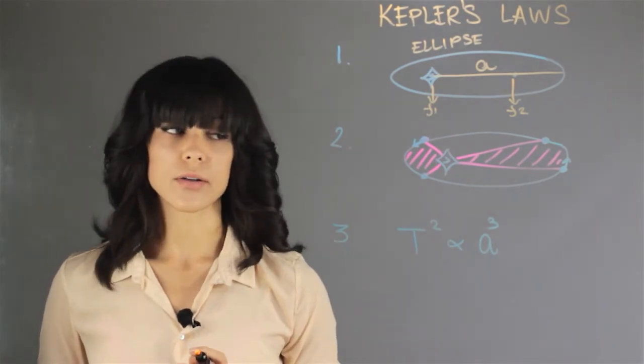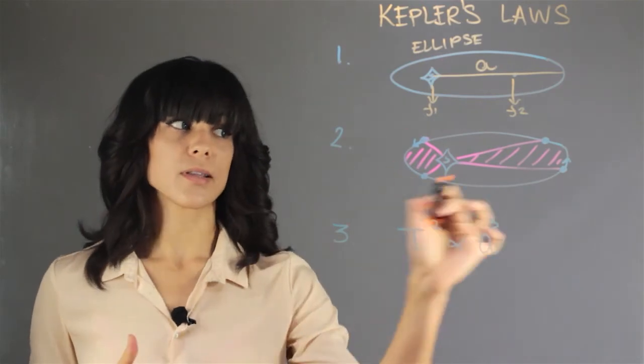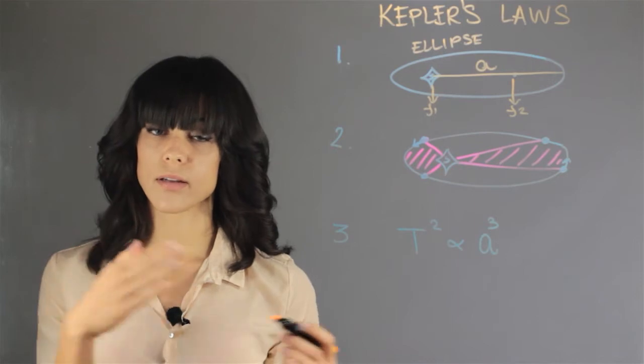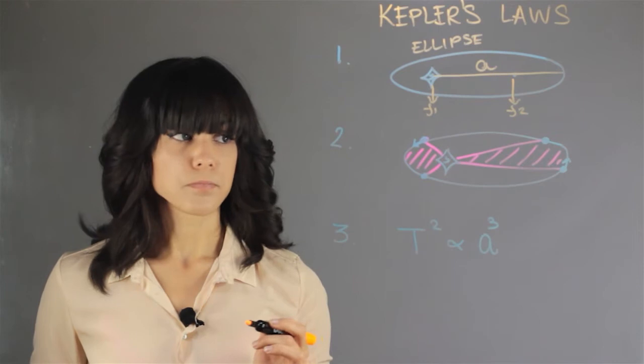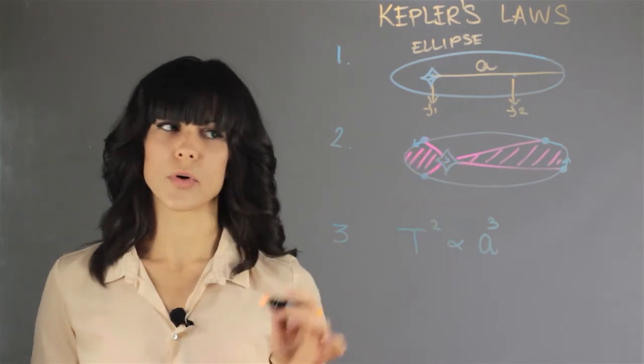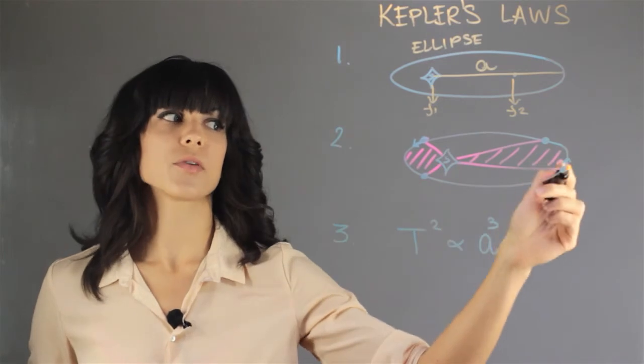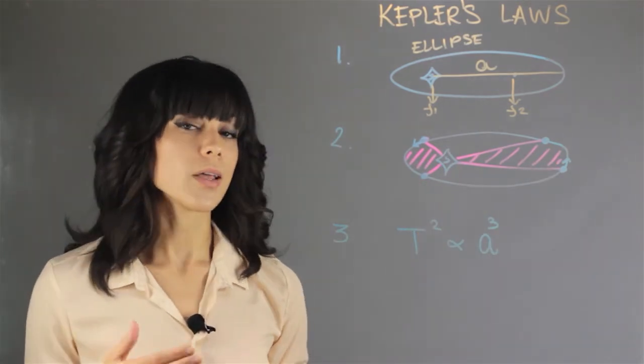The second law is called the equal area law. Because of the ellipses, it looks like sometimes the planet covers less path on one end than the other. When we're closest to the Sun we speed up so it looks like we cover a lot more area. When we're further from the Sun we go slower so it looks like we cover less area.